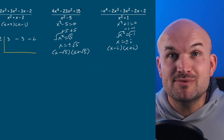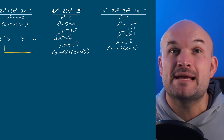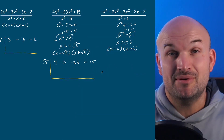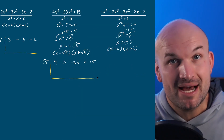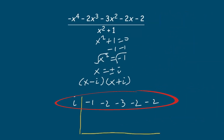Remember, I don't have an x cubed or x term in this polynomial, so I need to use zero as a place value. So the square root of five will be on the outside and then four, zero, negative twenty-three, zero, and fifteen will be my coefficients inside the synthetic division box. In this last example, I'll use the first factor x minus i to divide by. You can divide by imaginary numbers, and my coefficients are negative one, negative two, negative three, negative two, and negative two inside the synthetic division box.